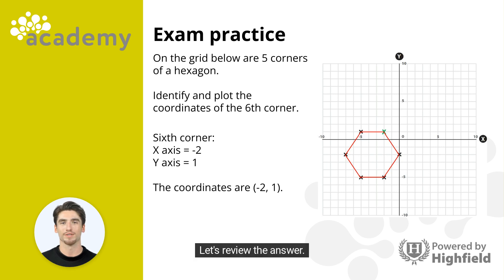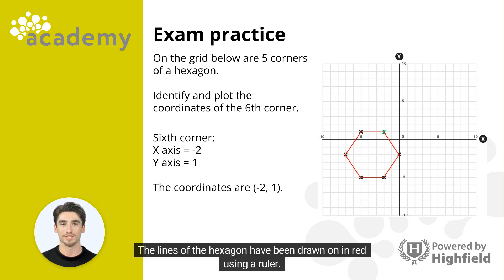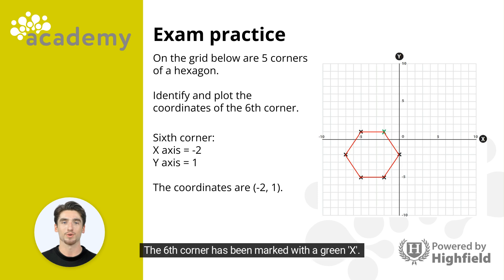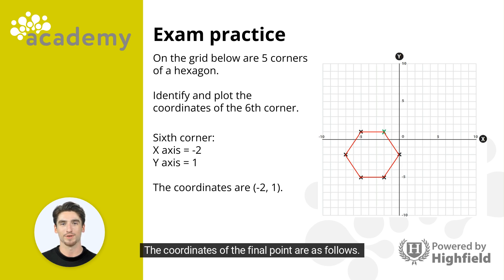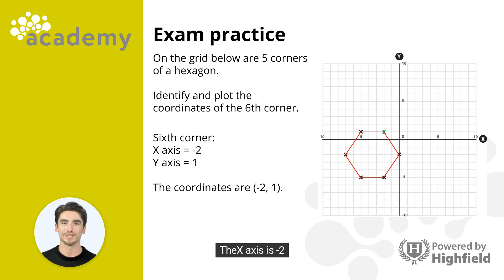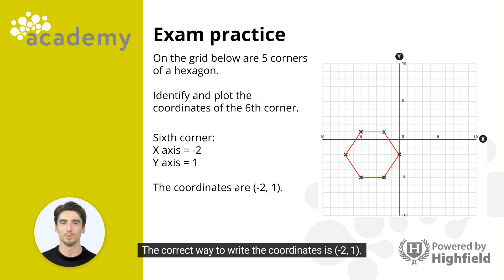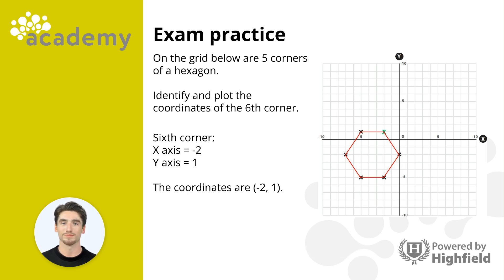Let's review the answer. The lines of the hexagon have been drawn on in red using a ruler. The sixth corner has been marked with a green x. The coordinates of the final point are: x-axis minus 2, y-axis 1. The correct way to write the coordinates is (minus 2, 1).